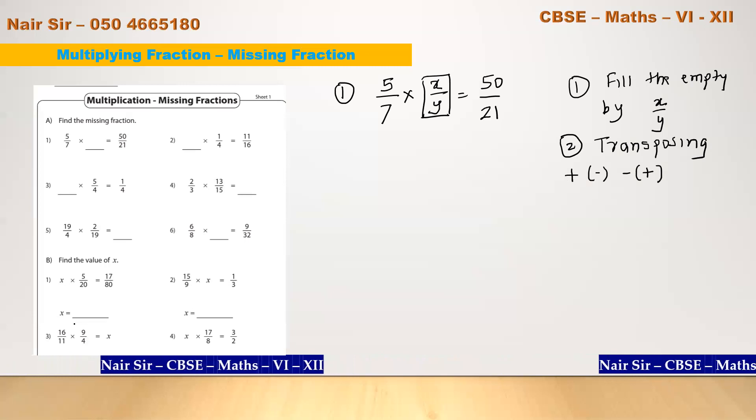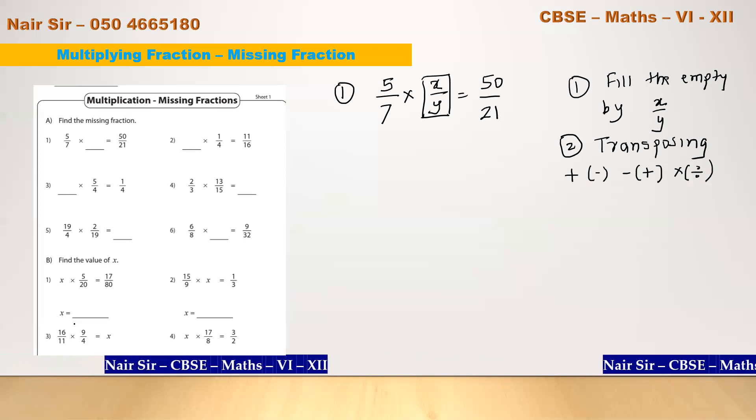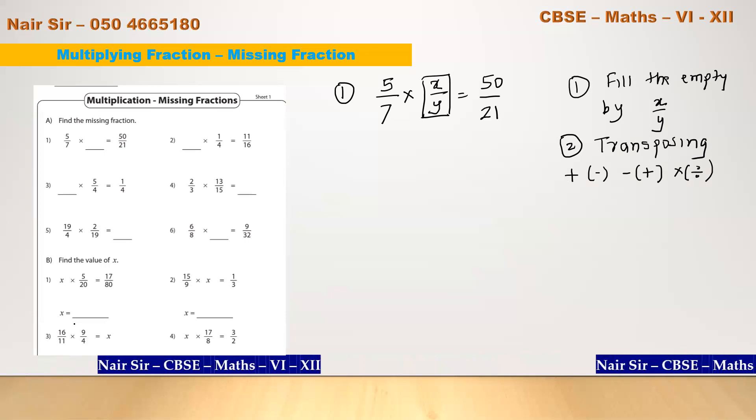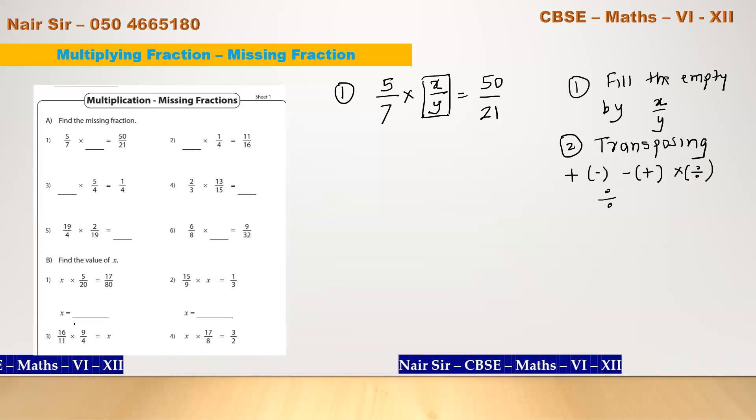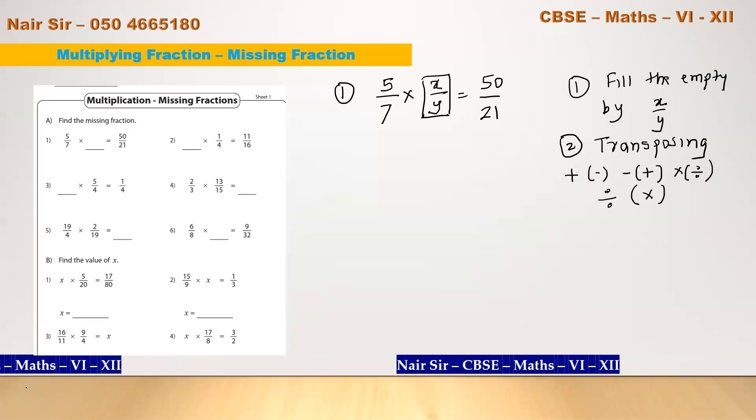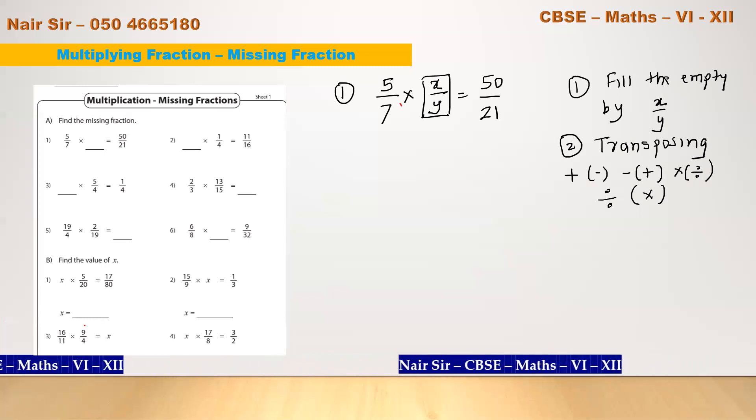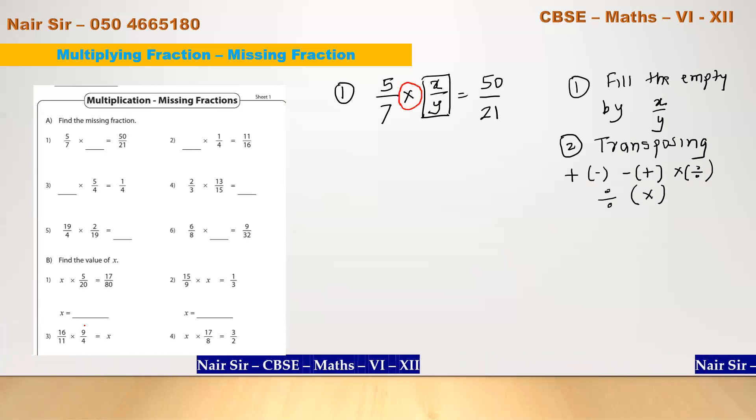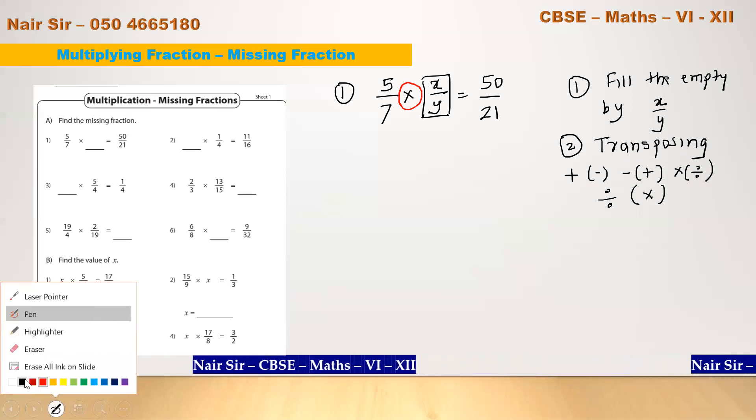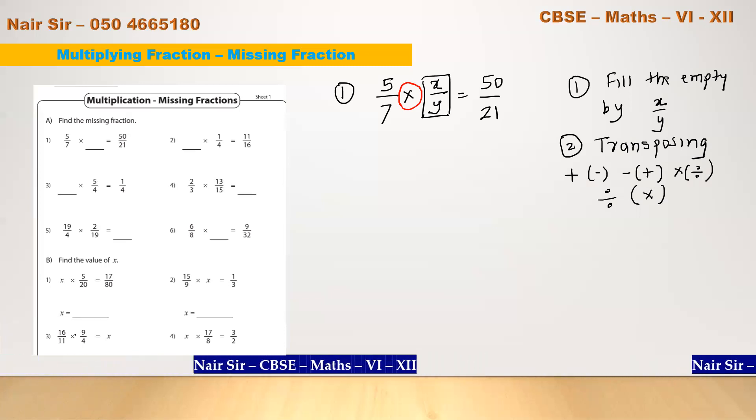If it is multiply on the right hand side it will become divide, and if it is divide on the right hand side it will become multiply. Now if you notice one thing, in this particular place this is multiplication. So what is the opposite of multiplication? The opposite of multiplication is division.